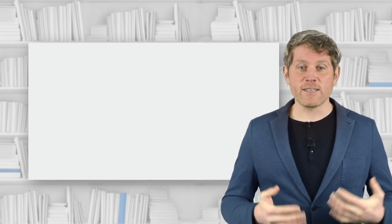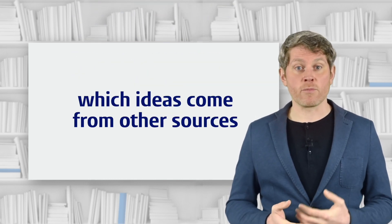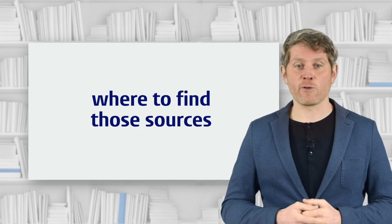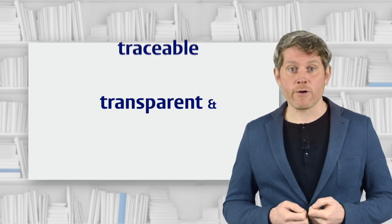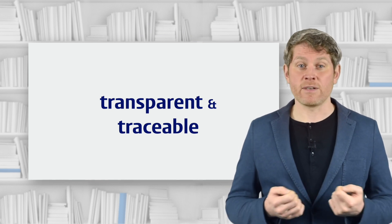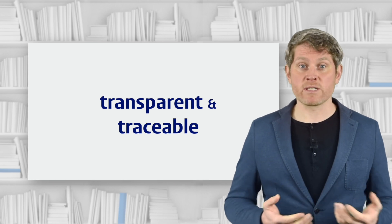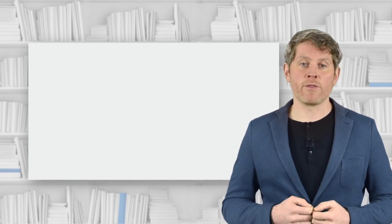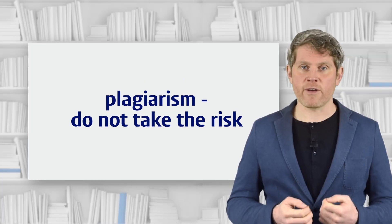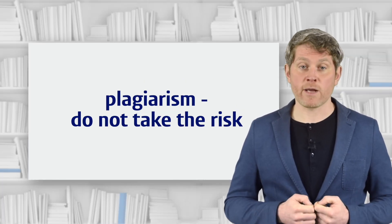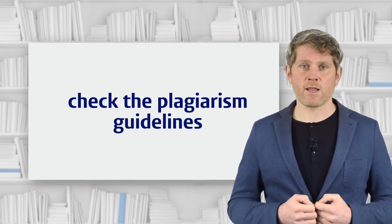So in this video, we've seen that citing is the way we let our readers know which ideas we got from other sources and where to find those sources. Whenever we use a source, we want it to be transparent and traceable. If it isn't, it means we're not participating fairly in the academic debate, our reader is not fully informed, and we run the risk of committing plagiarism. If you plagiarize, the consequences can be very serious, even if you do it by accident. You should check the plagiarism guidelines of your program for more details on this.